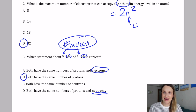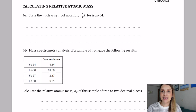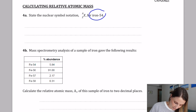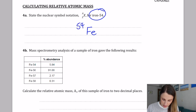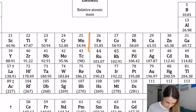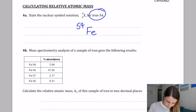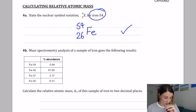This question about nuclear symbol notation uses iron-54. The symbol for iron is Fe, and 54 represents the mass number so it goes at the top as A. Checking the periodic table, iron's proton number is 26, so 26 goes at the bottom. That gets you the one mark for the question, so just make sure you're okay with the organization of nuclear symbol notation.